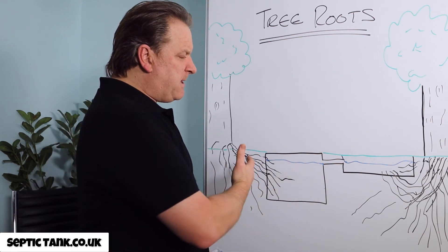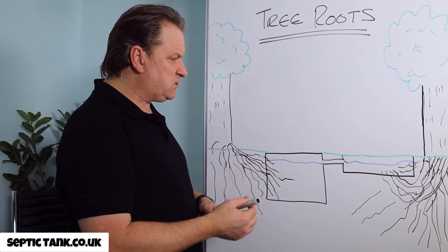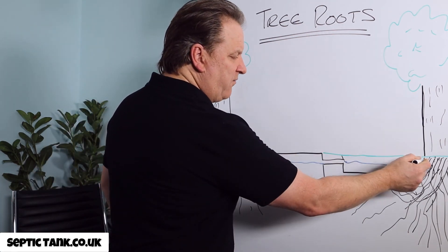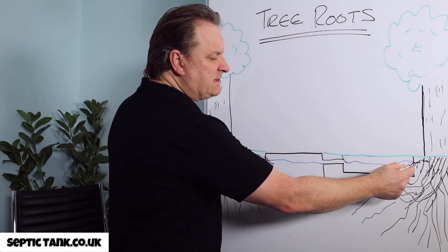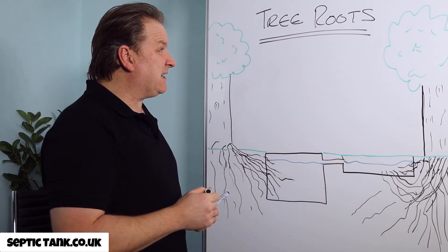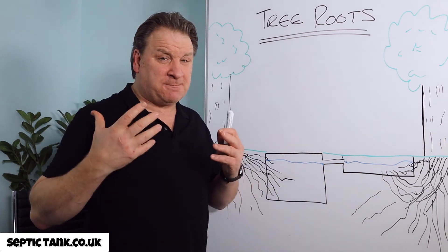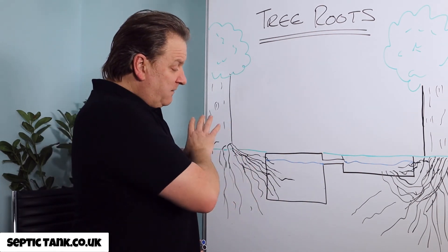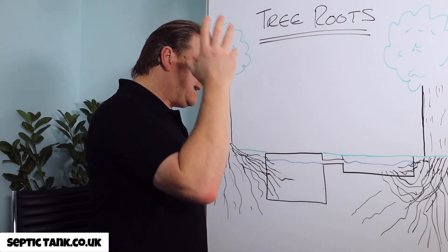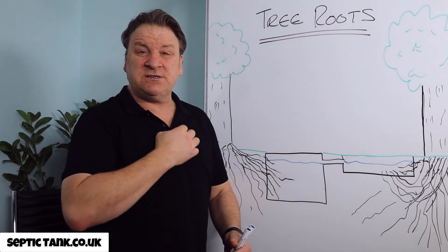So what do many people do if they find themselves in a situation where the roots from the trees have penetrated a septic tank and drainage field? Well, many people think it's a bad, bad thing. And for that reason, they replace the septic tank and soak away and spend thousands doing that.